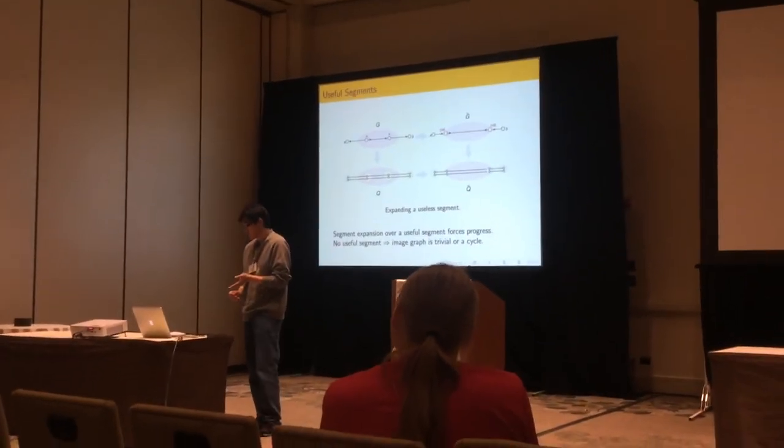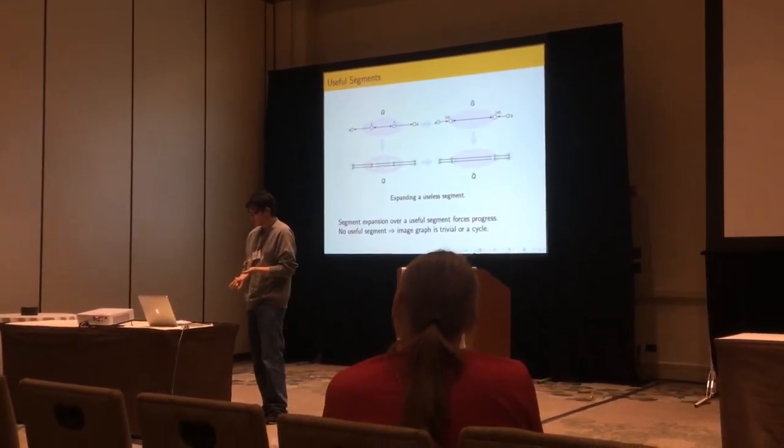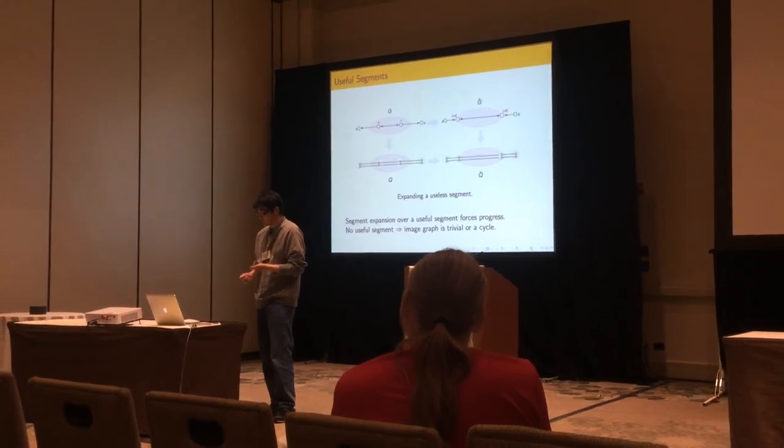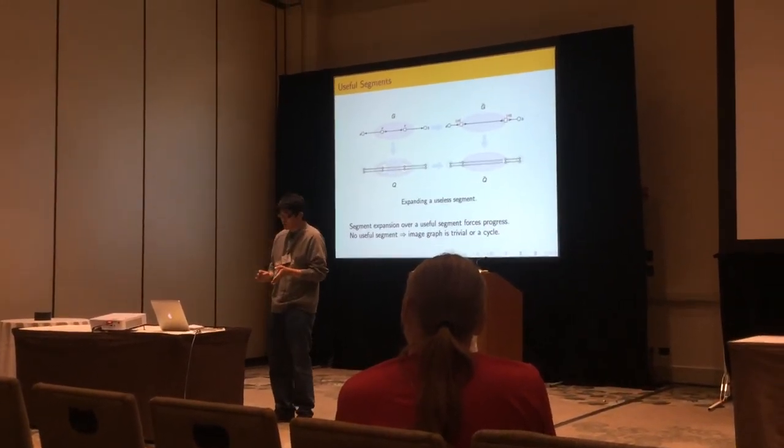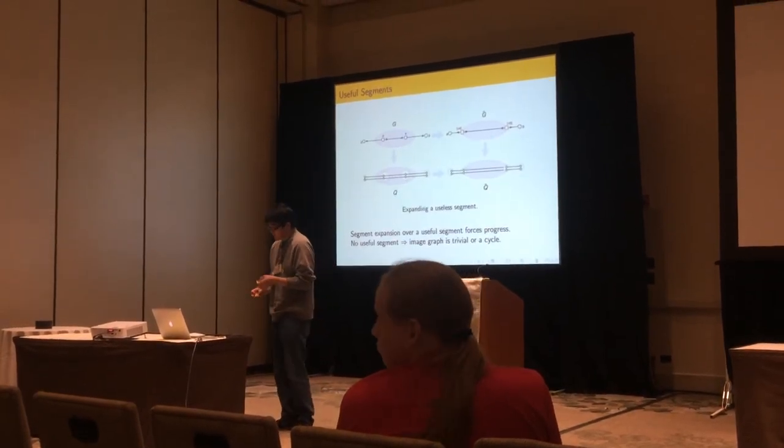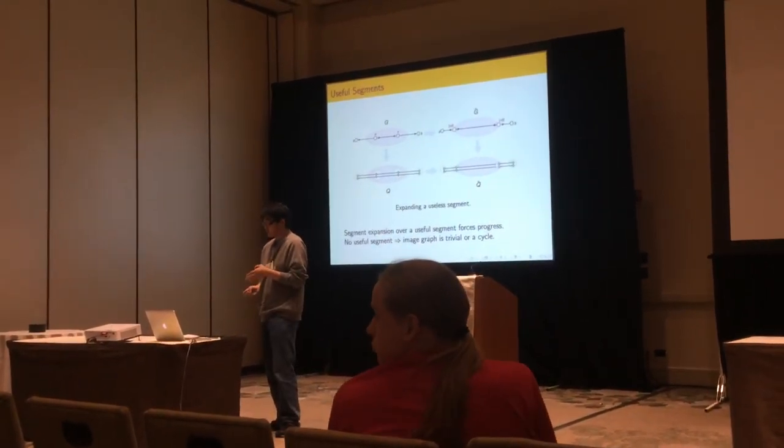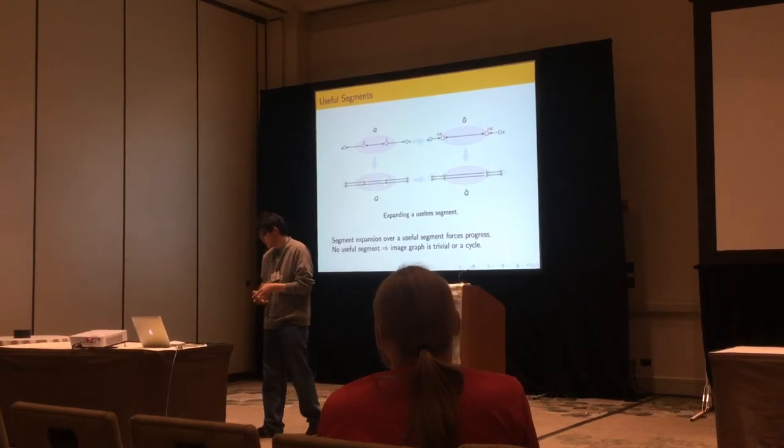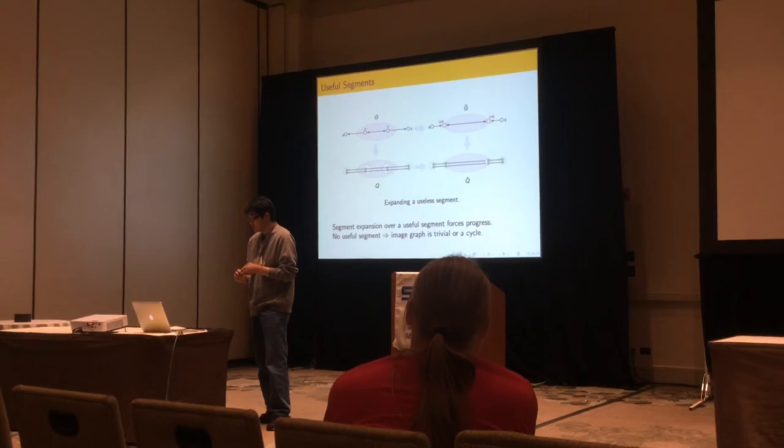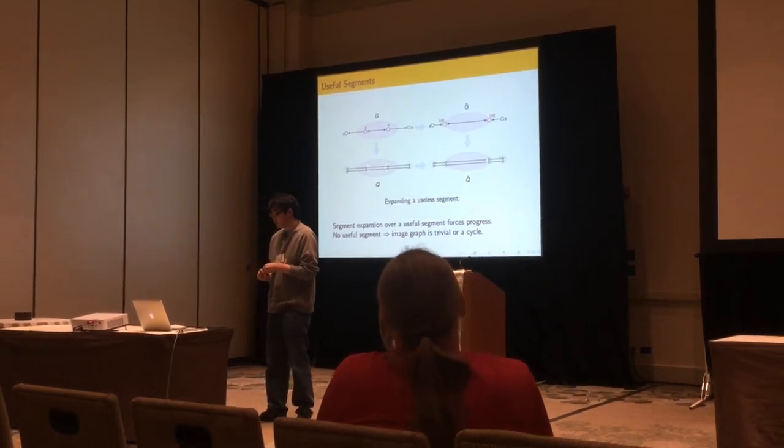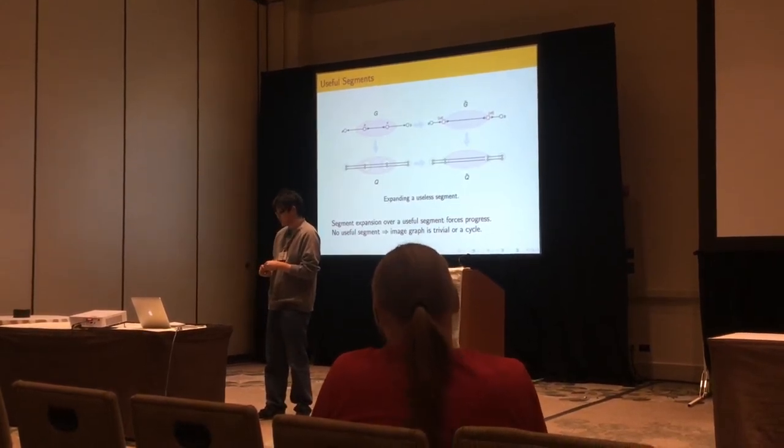So we call this kind of segment useless because it doesn't help at all. So a segment expansion, if it's not useful, we call it useful. And the segment expansion of useful segments always makes progress. And once there's no useful segments, then the image graph is either trivial or it's a cycle.